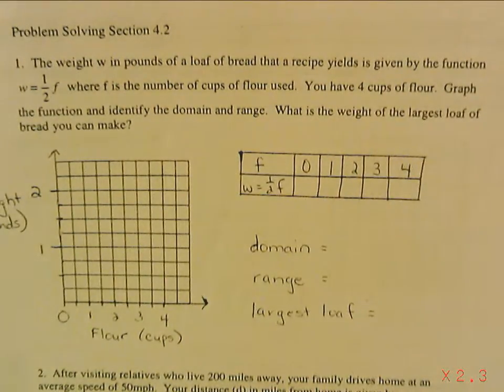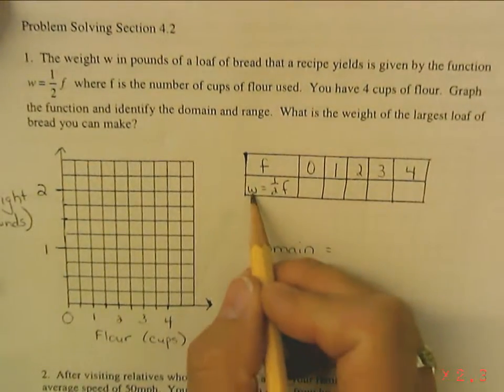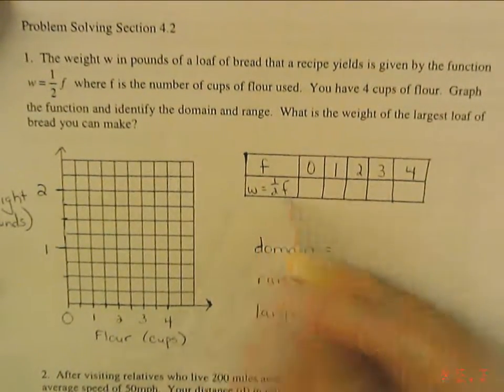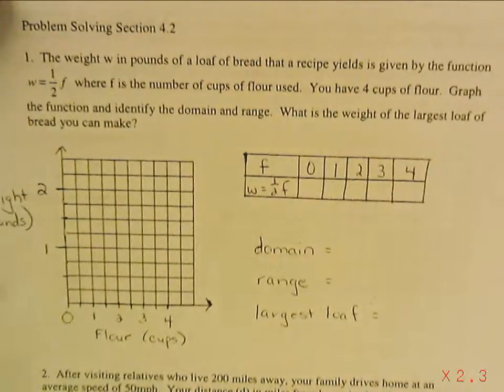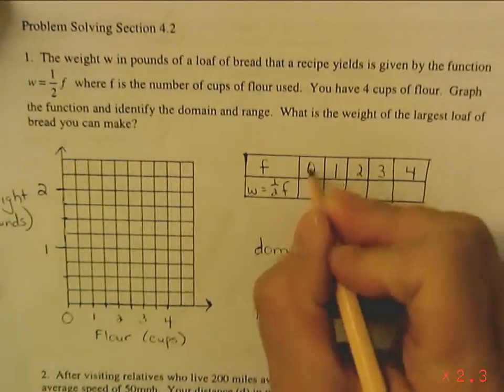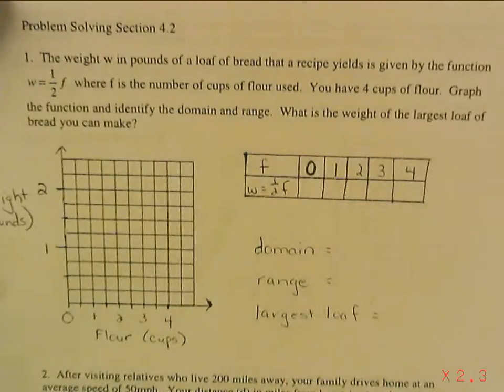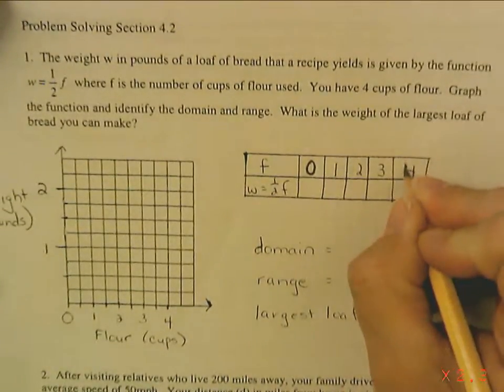Okay, so they tell me w equals one half f. Now they're also telling me my domain is restricted. I can't have less than zero cups and I can't have more than four.